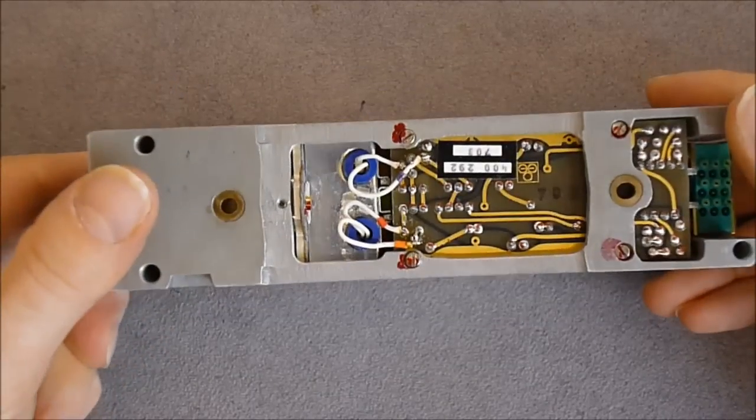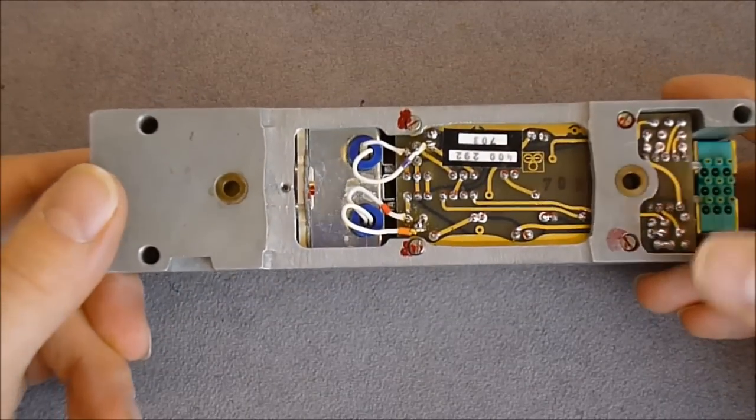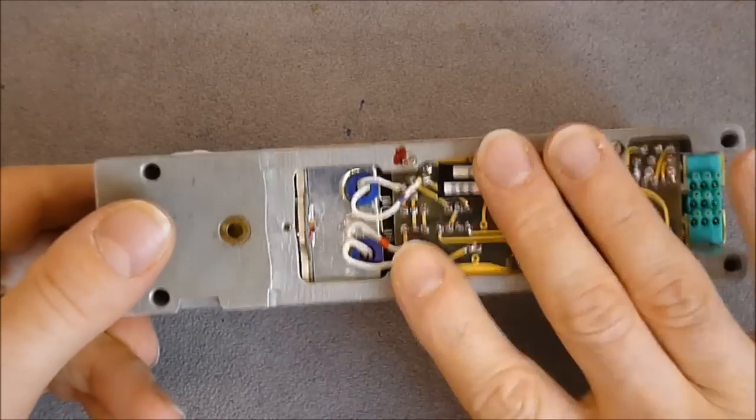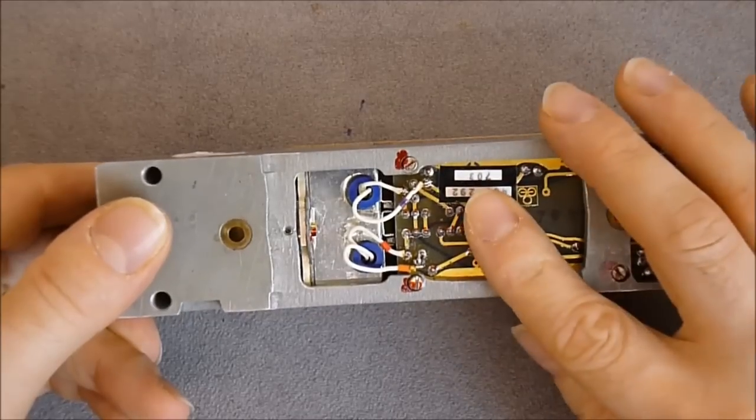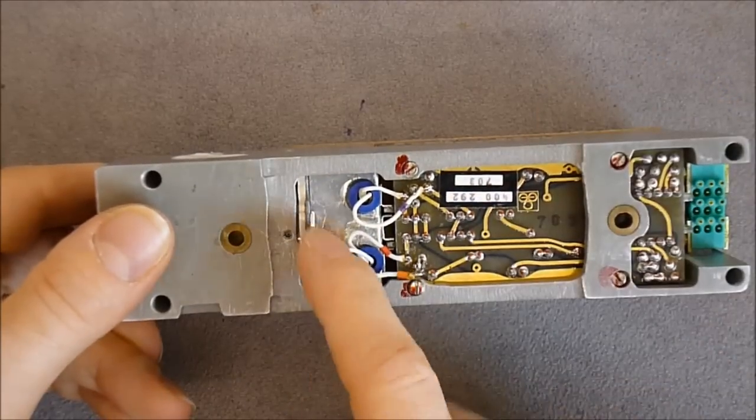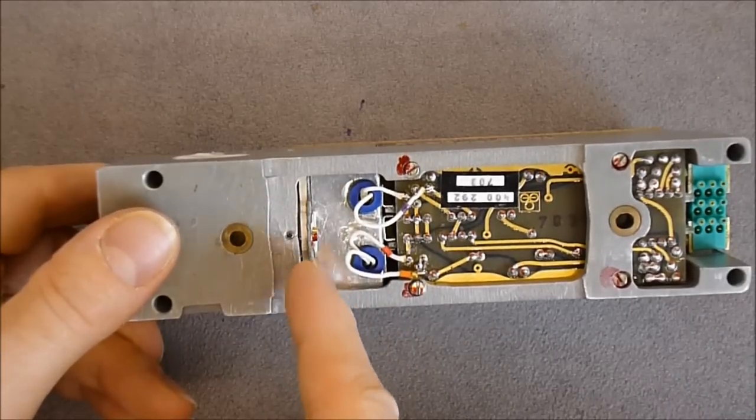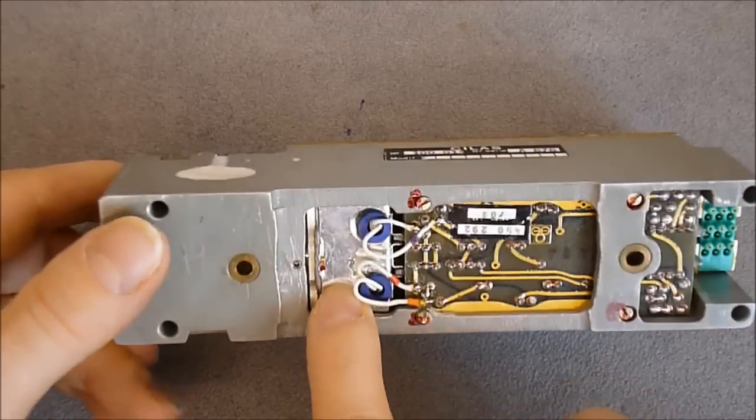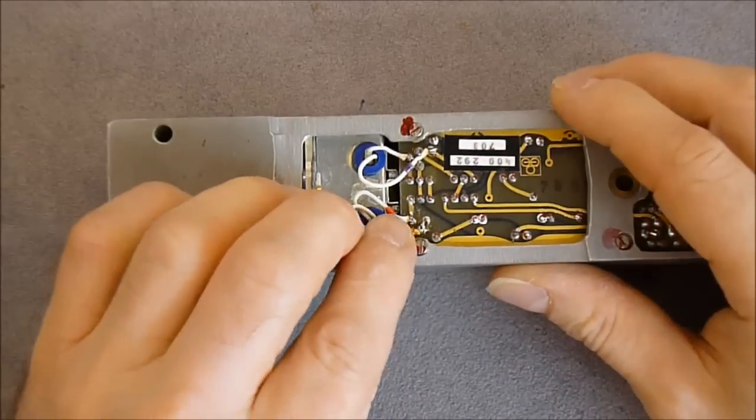We already had a first look in a previous video. So the goal today will be to remove this PCB and try to have a look at the shielded box here which I never had access to before, which may contain some receiver array.